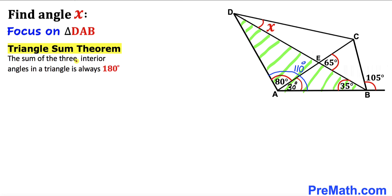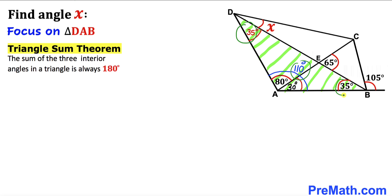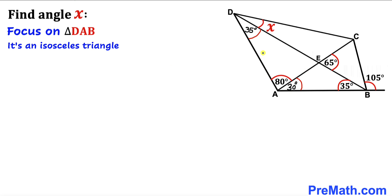Recalling the triangle sum theorem, the sum of three interior angles must equal 180 degrees. Therefore we conclude that this angle must be 35 degrees, since the sum of the three angles equals 180 degrees. Now making an observation in triangle DAB, this angle and this angle are congruent, so we conclude that this is an isosceles triangle, meaning side AD is congruent to side AB.